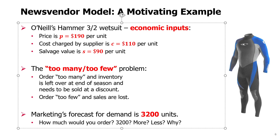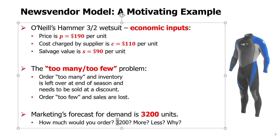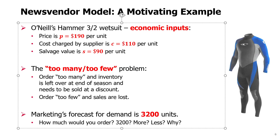The core problem is having too many or too few wetsuits. If we have too many, inventory is left over at the end of the season and needs to be sold at a discount. If we order too few, sales will be lost — we might sell all units before the end of the season and then some customers might want the suit after it has already sold out. Marketing is forecasting demand at 3,200 units. The question is: should we blindly follow the marketing forecast, or should we order more or less, and why?